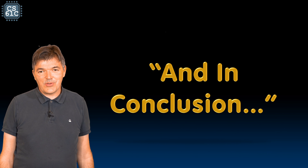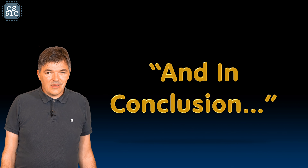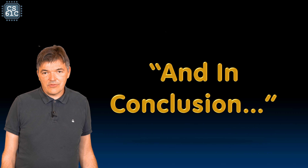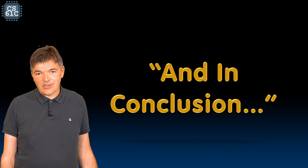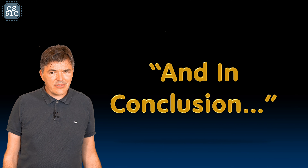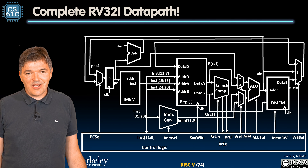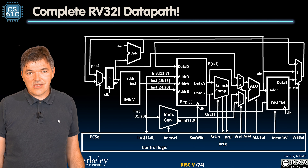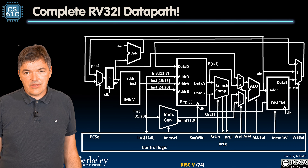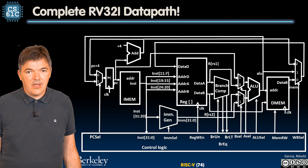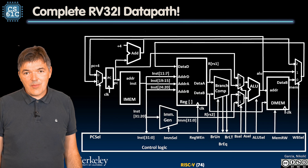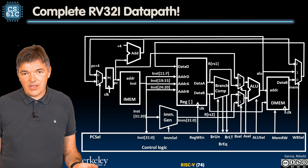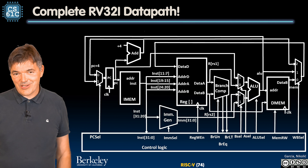Welcome back to RISC-V CPU design. In this mini module we don't really have to do anything except congratulate ourselves. We have just designed a complete data path that can execute every single one of the RV32i instructions from the RISC-V ISA. That's quite amazing — it enables us to execute any C program that we can compile into RISC-V assembly on our custom processor.